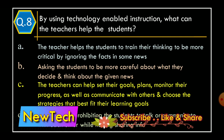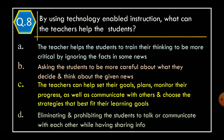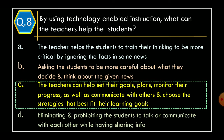Question 8: By using technology-enabled instruction, what can teachers help students with? Option A: The teacher helps the student train their thinking to be more critical by ignoring facts in some news. Option B: Asking students to be more careful about what they decide and think about given news. Option C: The teachers can help set their goals, plans, monitor their progress, communicate with others, and choose strategies that best fit their learning goals. Option D: Eliminating and prohibiting students from communicating while sharing information. The correct option is Option C.